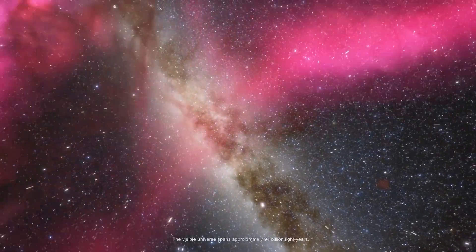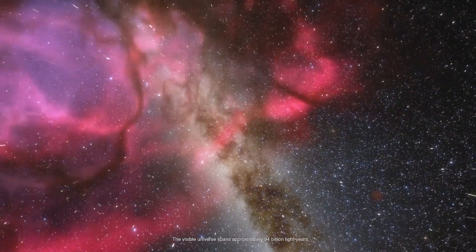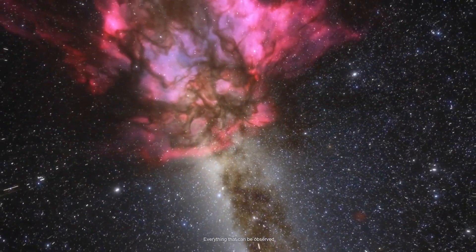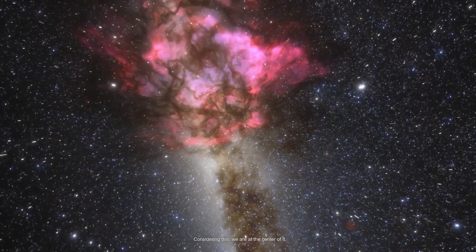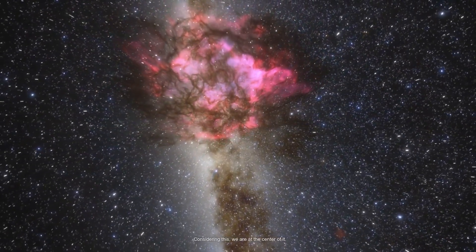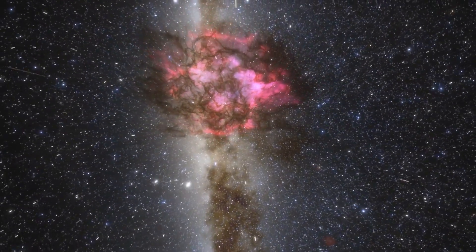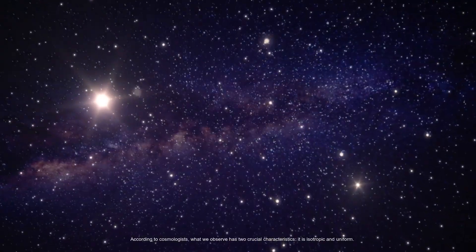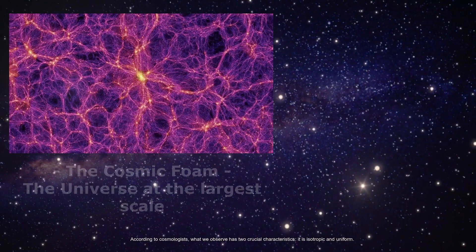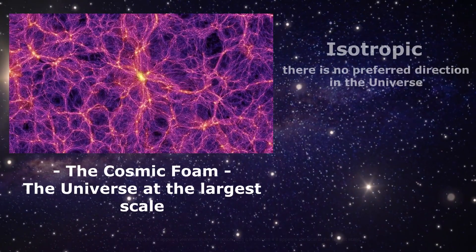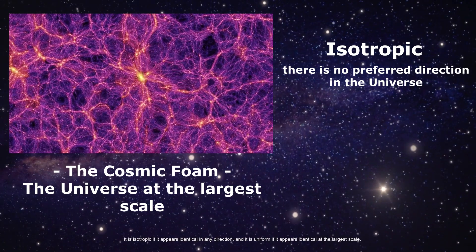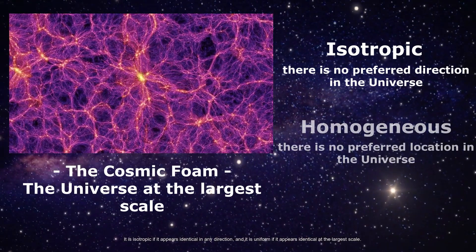The visible universe spans approximately 94 billion light-years. Everything that can be observed. Considering this, we are at the center of it. According to cosmologists, what we observe has two crucial characteristics. It is isotropic and uniform. It is isotropic if it appears identical in any direction, and it is uniform if it appears identical at the largest scale.